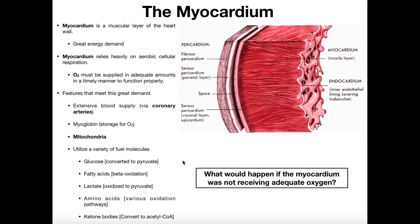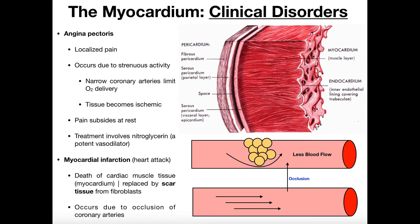However, oxidative phosphorylation is nice, and being able to convert all these things to acetyl-CoA is nice as well. But there's one limiting substance, and that is oxygen. The myocardium needs oxygen — if you get one thing out of this video, make sure that's what it is. So the question we're going to answer: what would happen if the myocardium was not receiving adequate oxygen?